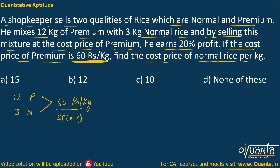Since he earns a 20% profit by selling this mixture, we can write: SP of mixture = 1.2 × CP of mixture. The factor 1.2 is the multiplying factor — we multiply it with the cost price to get the selling price. So: 60 = 1.2 × CP of mixture.